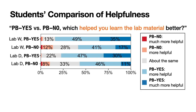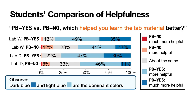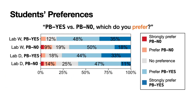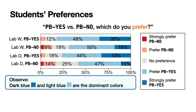In labs W and D, we also asked students to compare PBS to PBNO. We first asked them which helped them learn the lab material better. The stacked bar chart shows the result: the dark blue and light blue bars lead towards PBS, and the pink and red bars lead towards PBNO, with gray being neutral. Dark blue and light blue are the dominant colors — students generally found PBS more helpful. We also asked which environment they preferred, and similarly, students generally preferred PBS.